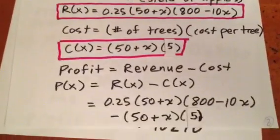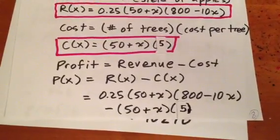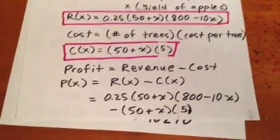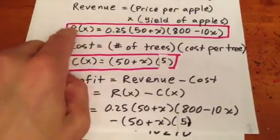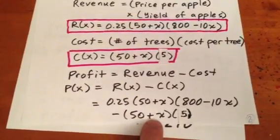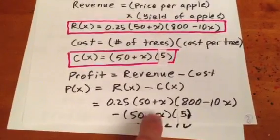Well, we know that profit is equal to revenue minus cost. So that means that P at X is equal to R at X minus C at X. And we get this formula by combining these two formulas and subtracting one from the other. We get this formula for our profit.